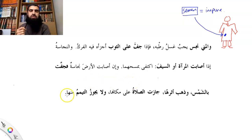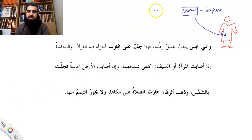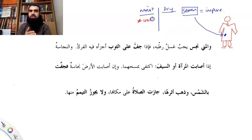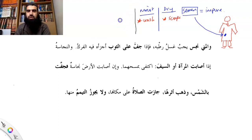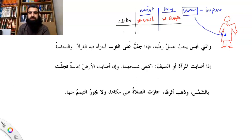But what if it's dry? Fa'idha jaffa ala thawb — now if it's dry on a cloth, you can draw a table of impurities with two columns: dry and moist. The ruling for clothes is: if semen is moist, you must wash it — there's no other way. But if it's dry — because it dries up and becomes like a solid — you can actually peel it off, scrape it off.